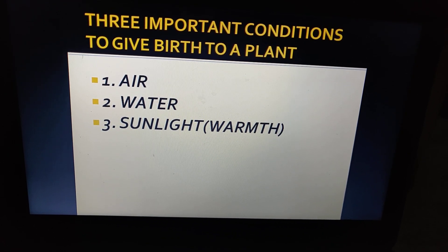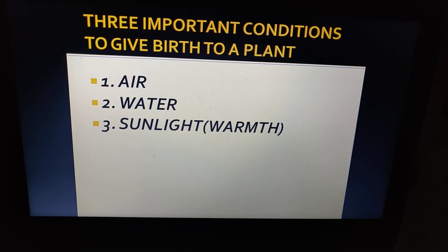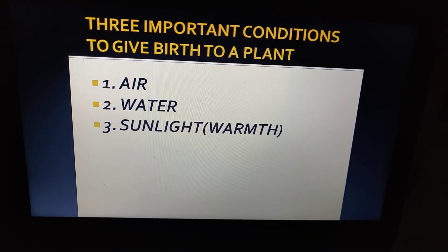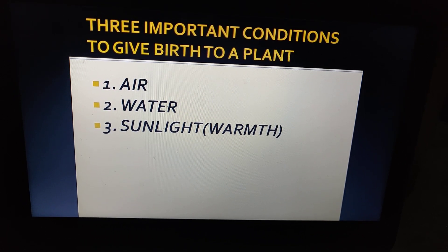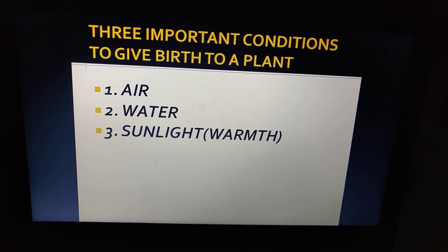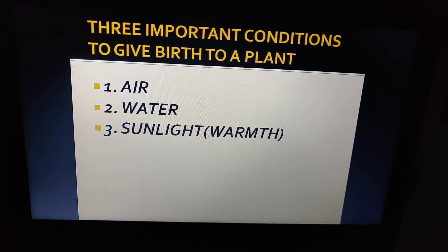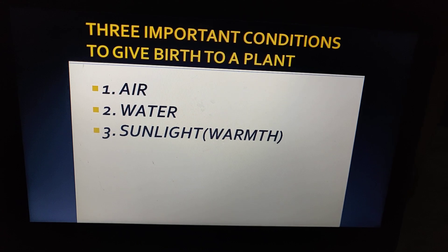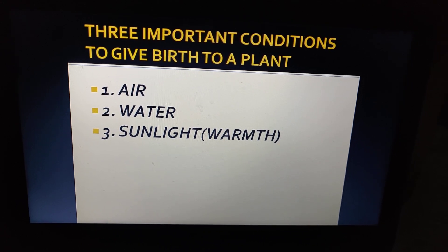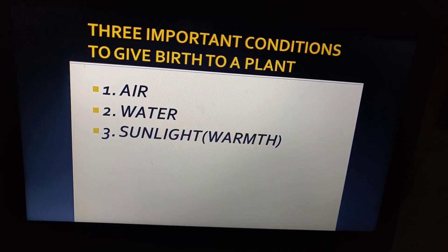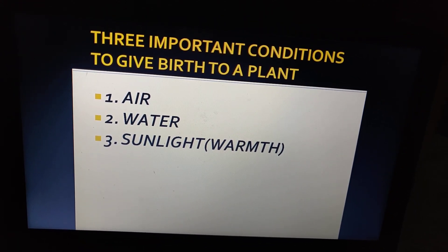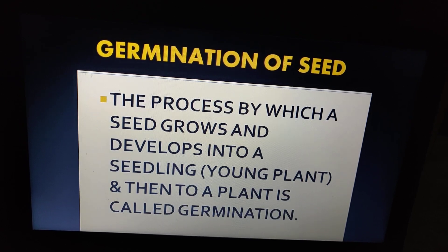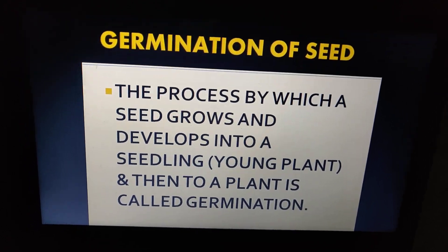We can also define sunlight in our own term as warmth. We have to provide warmth because some plants grow at a particular temperature — every plant grows at its own temperature. So warmth is basically the third factor, which is a necessary condition to give birth to a plant.